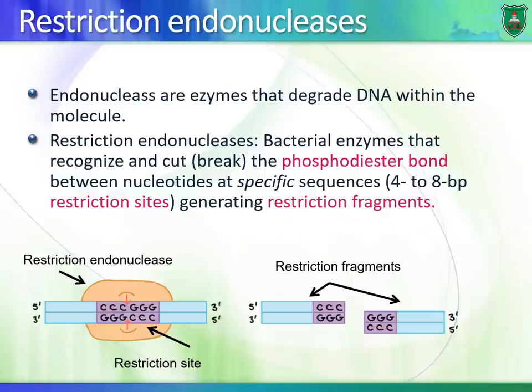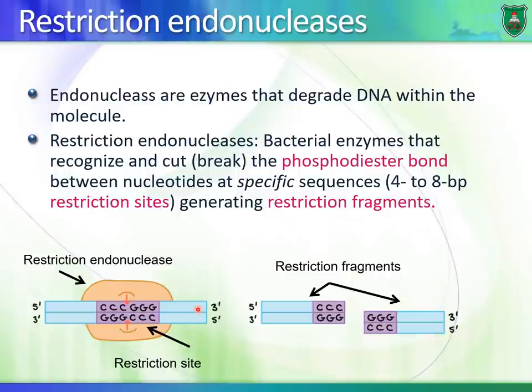Let's start with restriction endonucleases. Nucleases are enzymes that cleave nucleic acids — DNA and RNA. Specifically, endonucleases are enzymes that cut DNA in the middle of the molecule, as opposed to exonucleases, which cleave nucleotides from either end. We are going to talk about restriction endonucleases — bacterial enzymes that degrade DNA at specific positions in the middle.